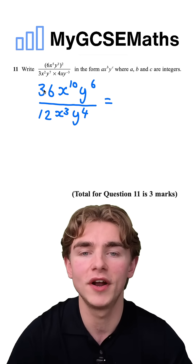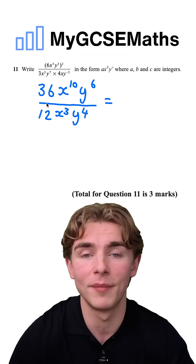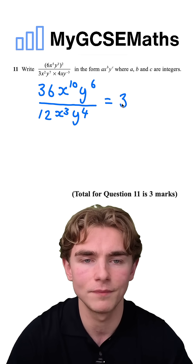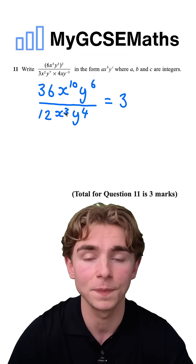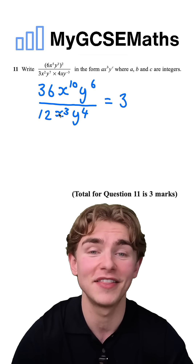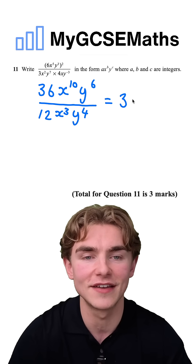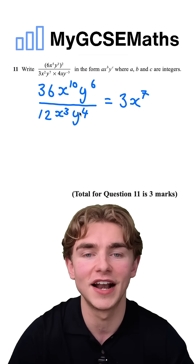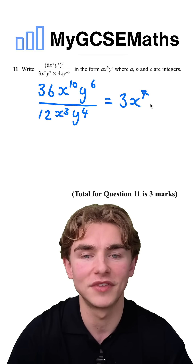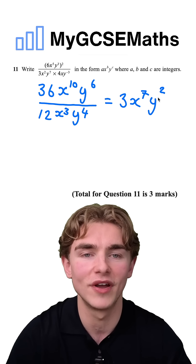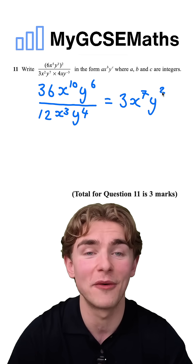Now we can simplify. We're going to do our 36 divided by our 12 — 36 divided by 12 is 3. Next, we do x to the power of 10 divided by x to the power of 3. Whenever we divide the same base to another power, we subtract those powers: 10 subtract 3 gives us x to the power of 7. Finally, y to the 6 divided by y to the power of 4 gives us y to the power of 2, because 6 take away 4 is 2. This gives us our answer of 3x to the power of 7, y to the power of 2.